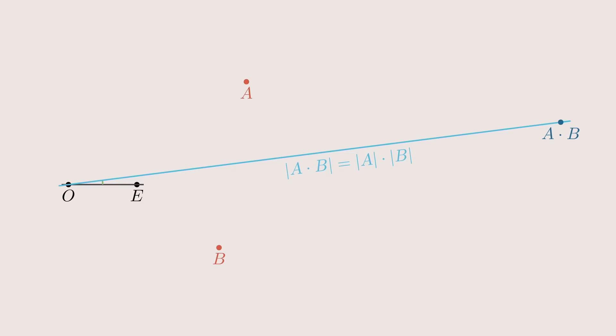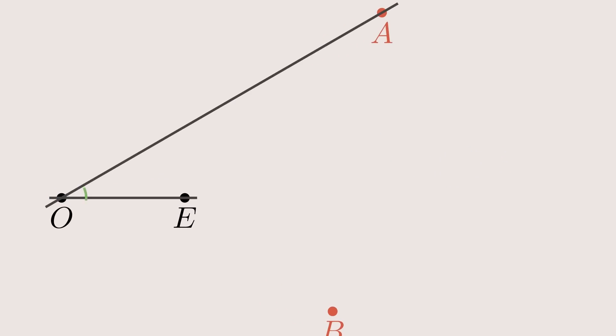And if you've heard about complex numbers, you have probably already noticed that we're essentially just calculating with complex numbers here. So, the multiplicative inverse of A should be mirrored along the line through O and E, which we will call real axis from now on, and have a length of 1 over the length of A. So how do you construct this using compass and straight edge?